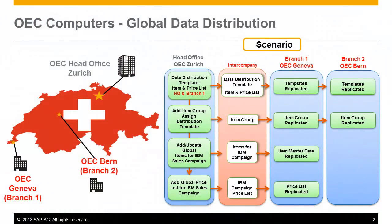Managing data distribution across expanding intercompany landscapes can be a complex and time-consuming task. Intercompany landscapes may not want to share all master data which may not be relevant to specific branch companies and their local markets.